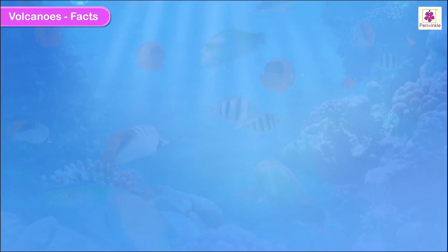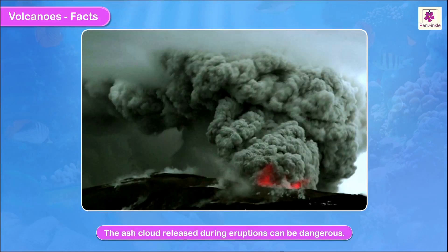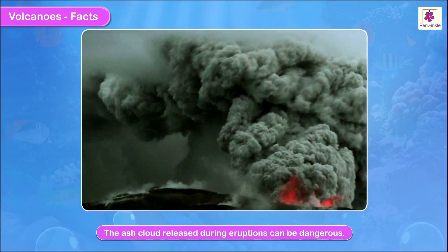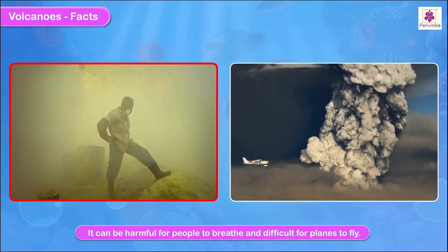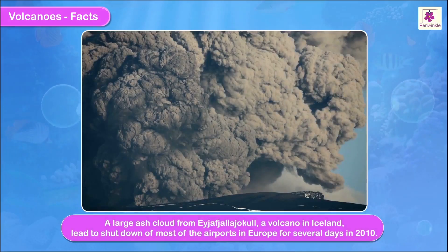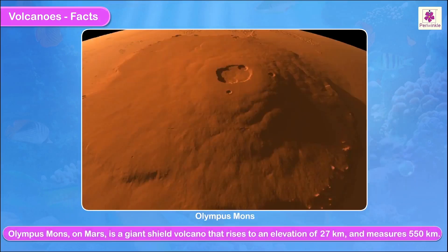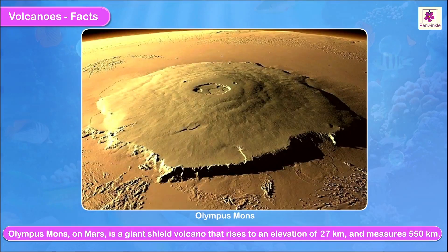Facts about volcanoes: 70 percent of all volcanic eruptions occur under the ocean. The ash cloud released during eruptions can be dangerous — it can be harmful for people to breathe and difficult for planes to fly. A large ash cloud from the Eyjafjallajökull volcano in Iceland led to the shutdown of most airports in Europe for several days in 2010. The tallest volcano in the solar system is on Mars — Olympus Mons, a giant shield volcano that rises to an elevation of 27 kilometers and measures 550 kilometers across.